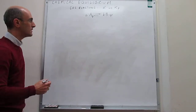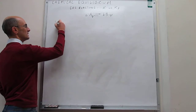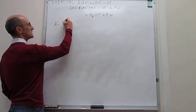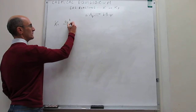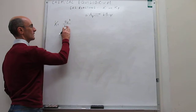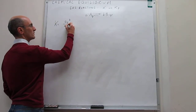We have seen that, generically, the way that you write the equilibrium constant is by using activities. So you start with the activity of products elevated to the power of the stoichiometric coefficient, divided by the activity of reagents A to the power of the stoichiometric coefficient.